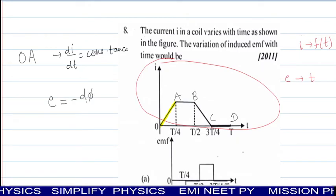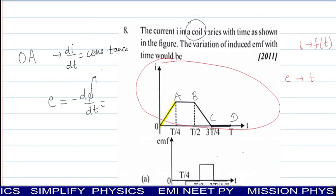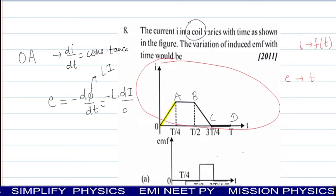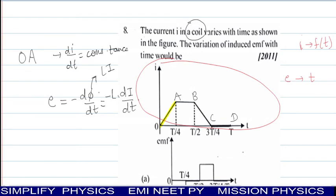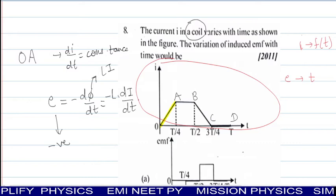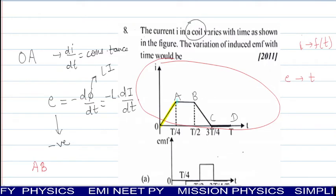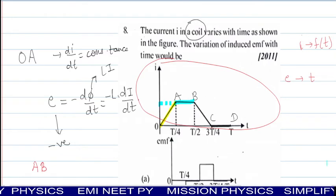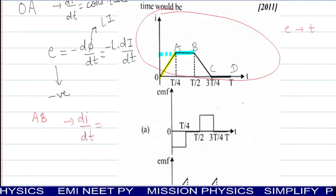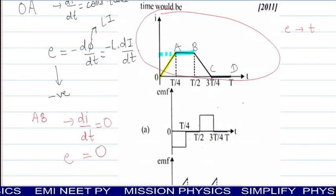Your answer for E comes as minus d phi by dt. We're talking about a coil, so obviously self-induction will come. As soon as you put phi as L into I, this is minus L into dI divided by dt. If we don't take magnitude, this E will be negative in interval 0 to A. Now check second interval A to B. When we go A to B in graph, current is constant. If current is constant, we can have dI upon dt equal to 0. So from A to B, induced EMF value will also become 0.